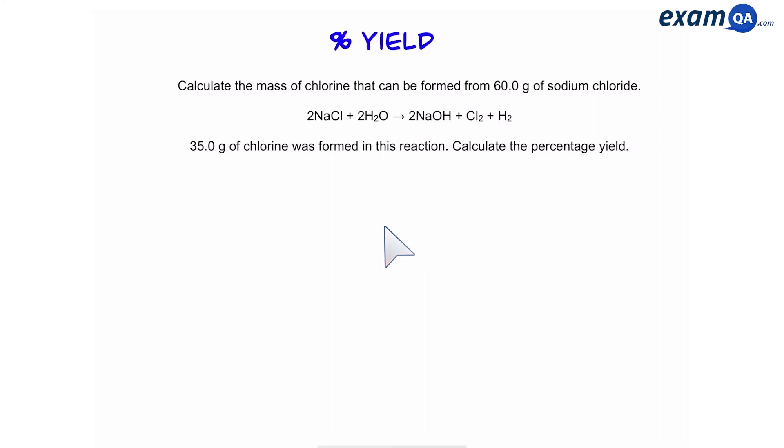Here's the next part of the question: 35 grams of chlorine was formed, calculate the percentage yield. So to work out yield, we're going to use this formula. Percentage yield is equal to actual mass divided by theoretical mass.